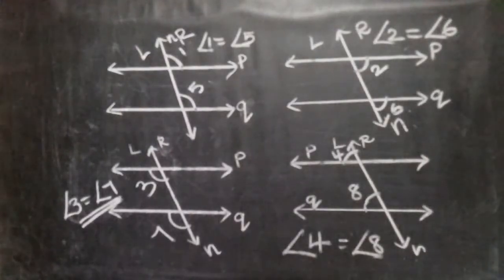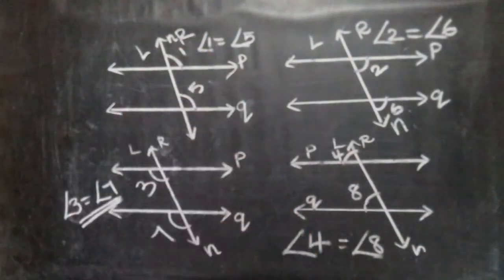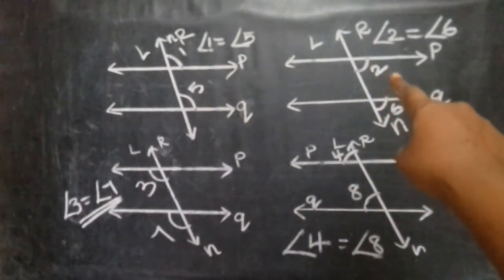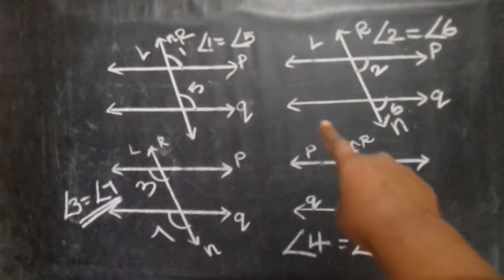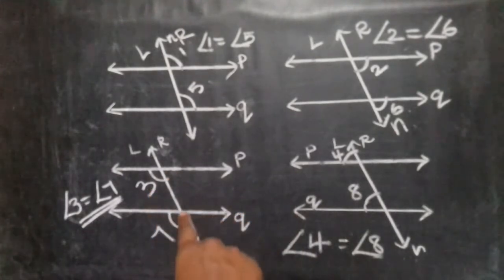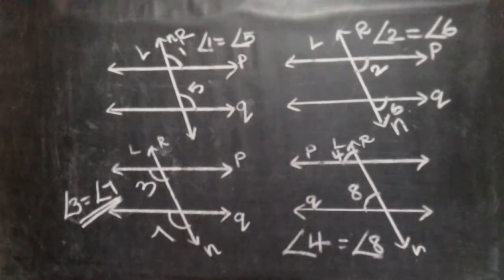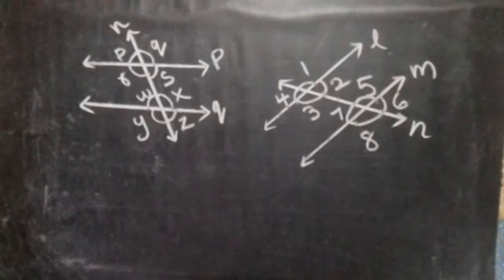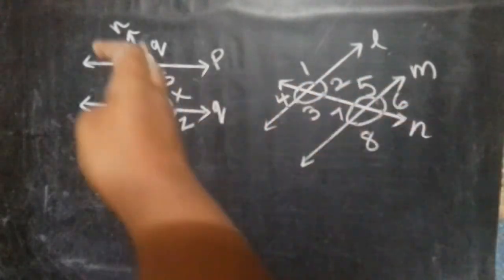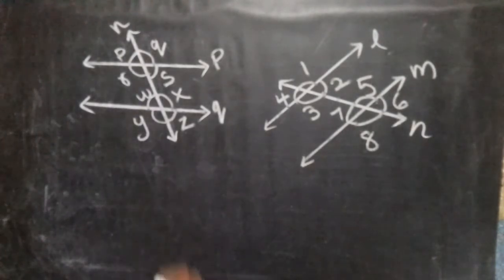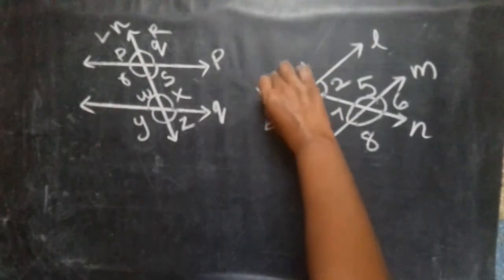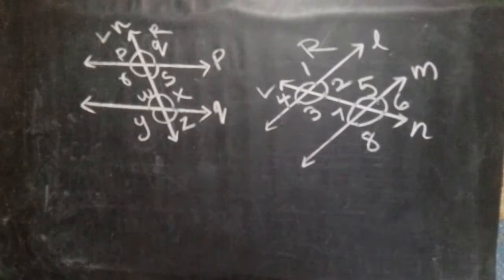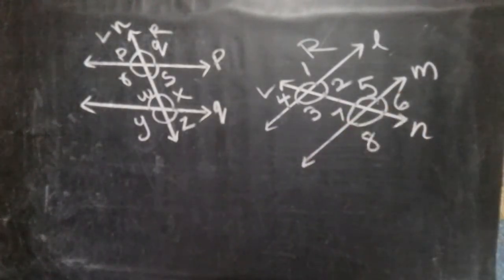Notice each pair: one angle is an interior angle and the other is an exterior angle. For example, angle 1 is an exterior angle and angle 5 is an interior angle. Angle 2 is an interior angle and angle 6 is an exterior angle. In figure 4, angle 4 is exterior and angle 8 is interior, angle 3 is interior and angle 7 is exterior. Each corresponding pair forms one interior and one exterior angle. For parallel lines, all four pairs of corresponding angles on the left and right sides are equal in measure.